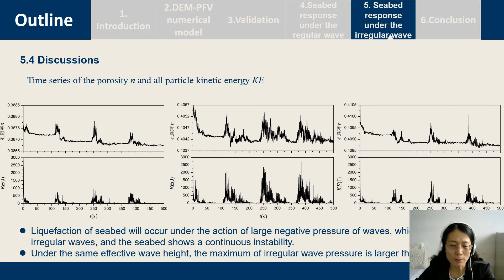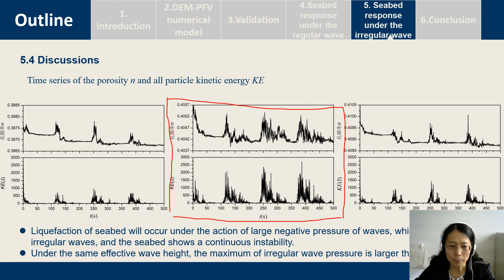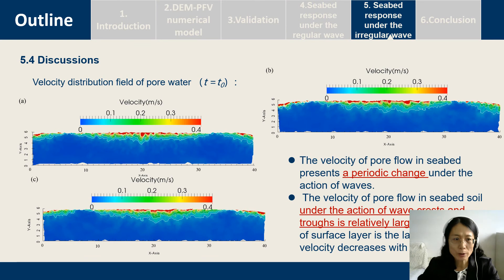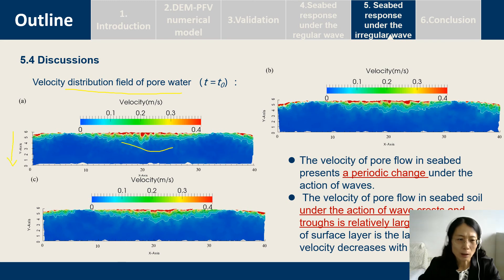We also give the time series of velocity and particle kinetic energy. For case 2, we can see that liquefaction of the seabed occurs under the action of large wave pressure, and for the irregular wave, the seabed shows continuous instability. We also give the velocity distribution of the pore water flow. We can see that the velocity of the pore flow in the seabed shows periodical changes under the action of the wave. Near the wave trough, the largest velocity occurs, and along the vertical direction, the velocity decreases.